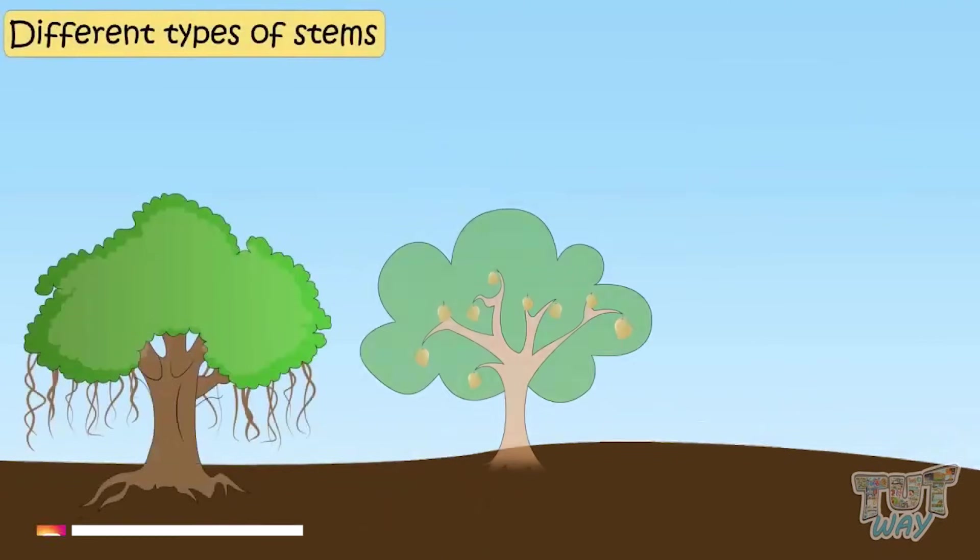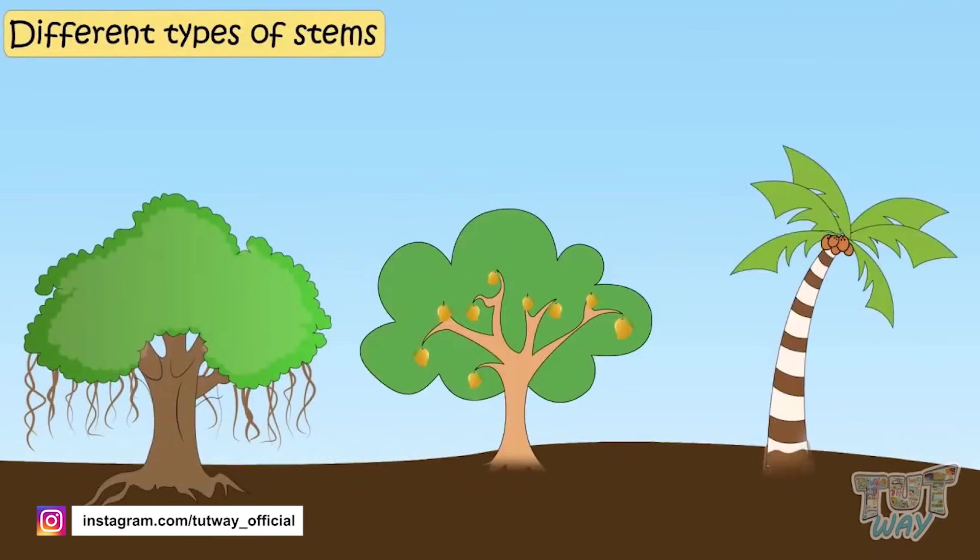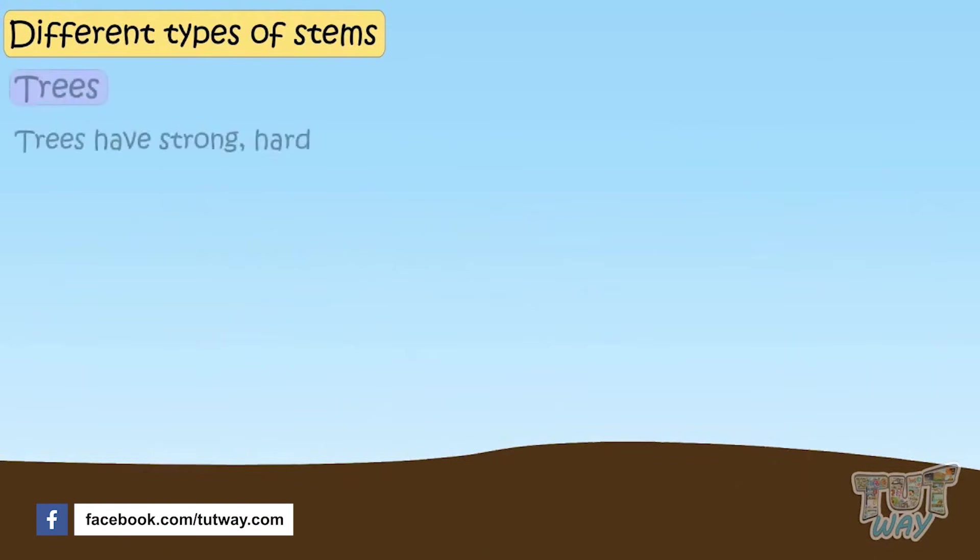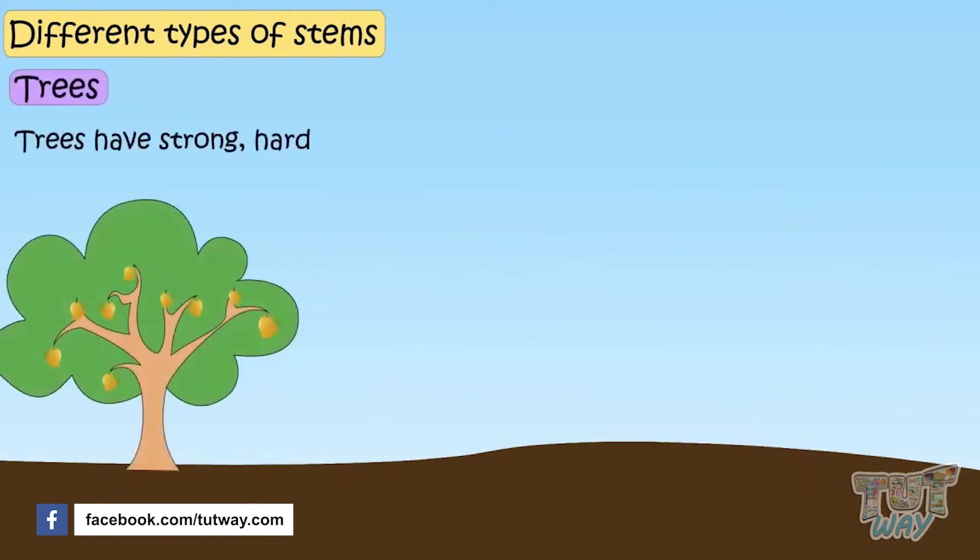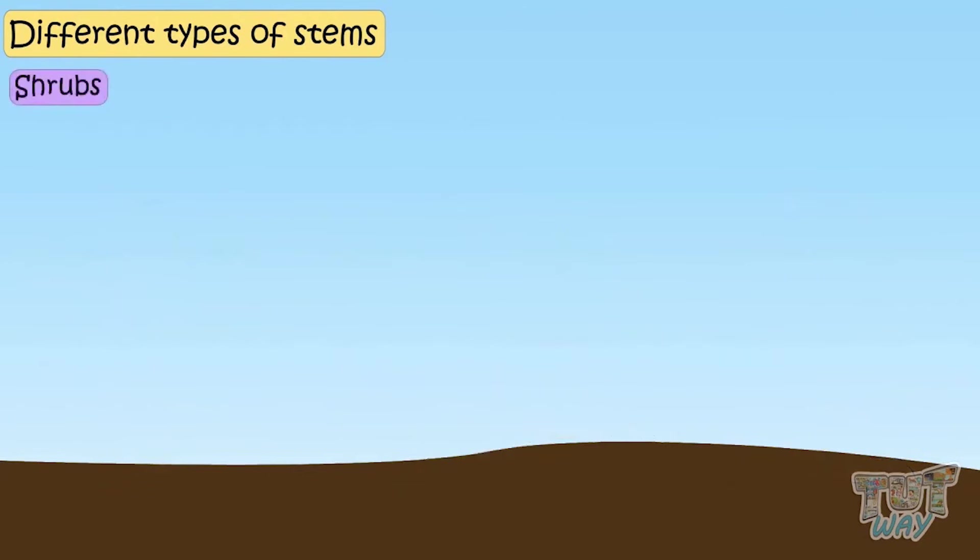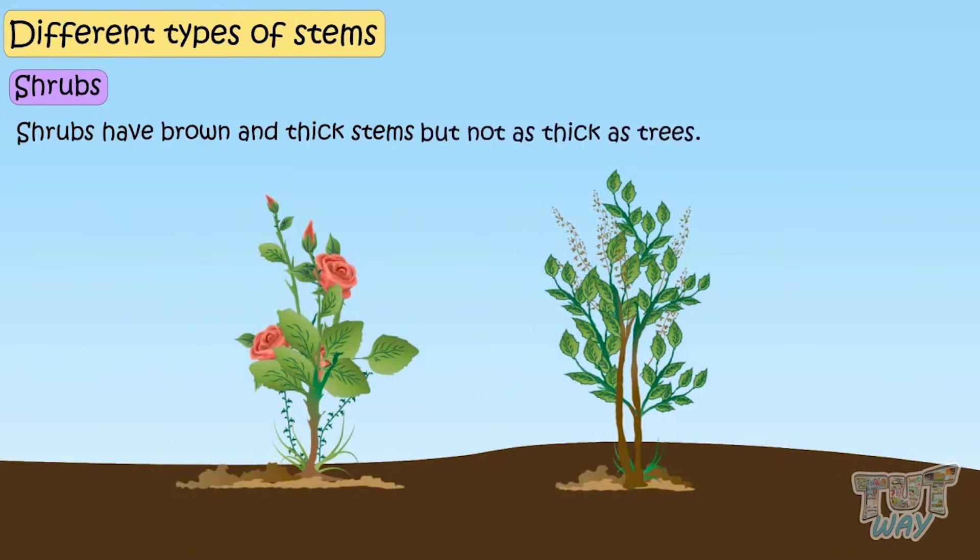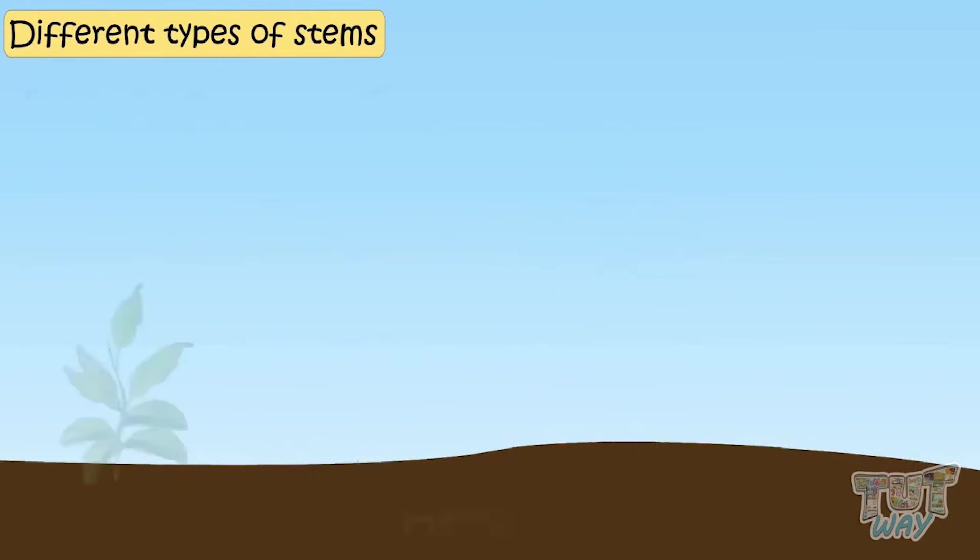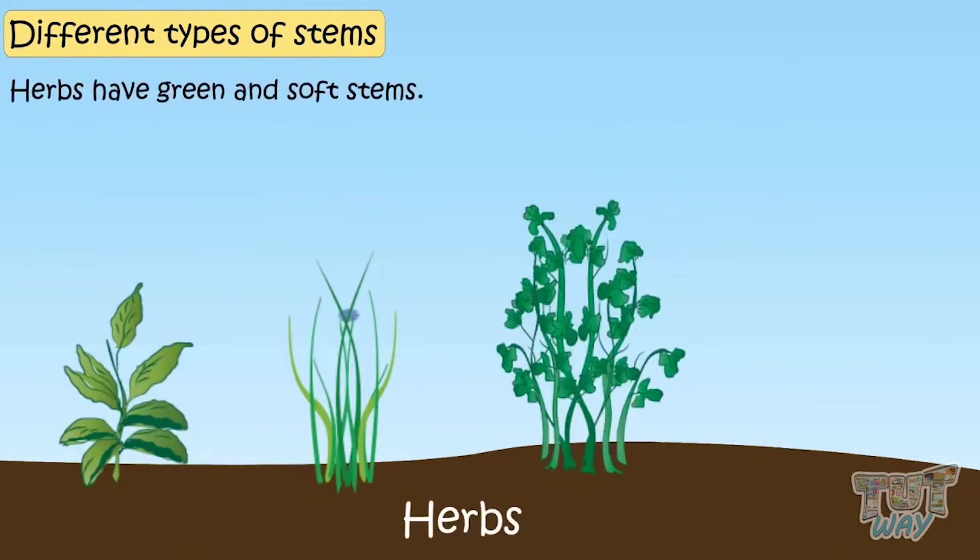Different types of plants have different types of stems. Big trees have strong, very hard and woody stem which is called a trunk. Shrubs have brown and thick stems but not as thick as trees. Herbs have green and soft stems.